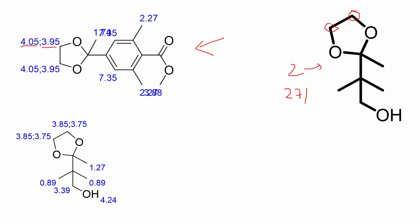I made a video earlier, but I think many of you misinterpreted what I wanted to say. To determine whether protons are enantiotopic or diastereotopic, if we have two hydrogens, we replace one of them with some other element X.